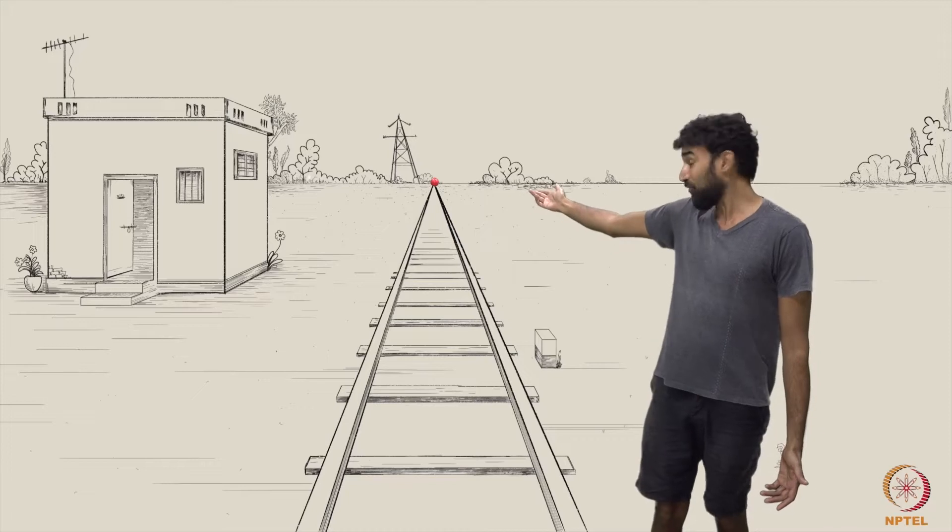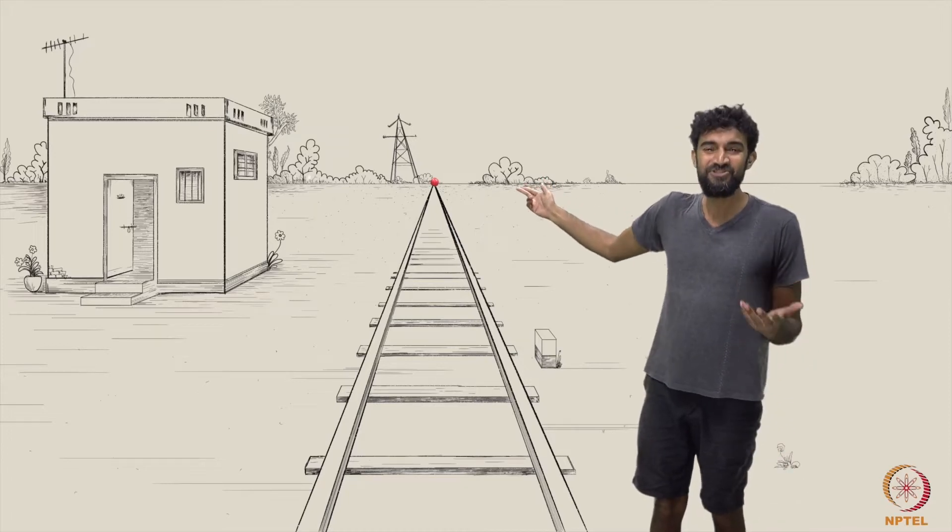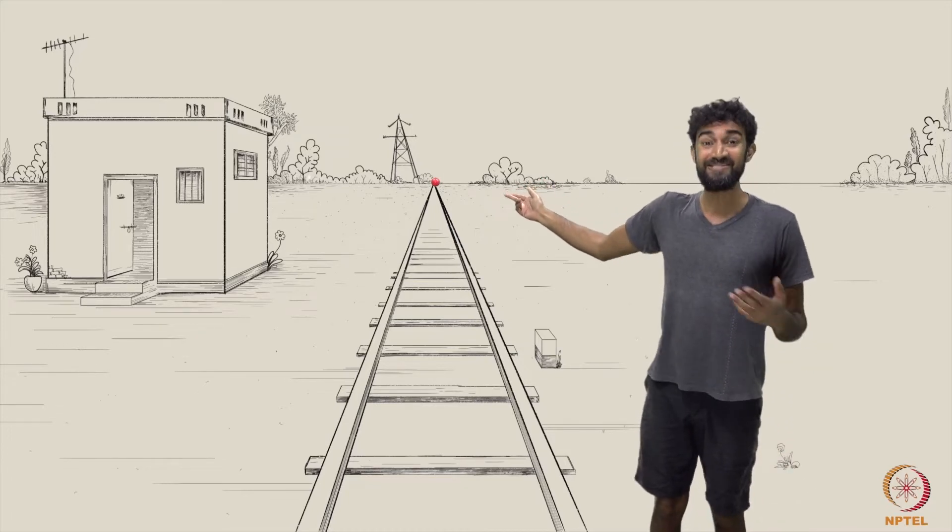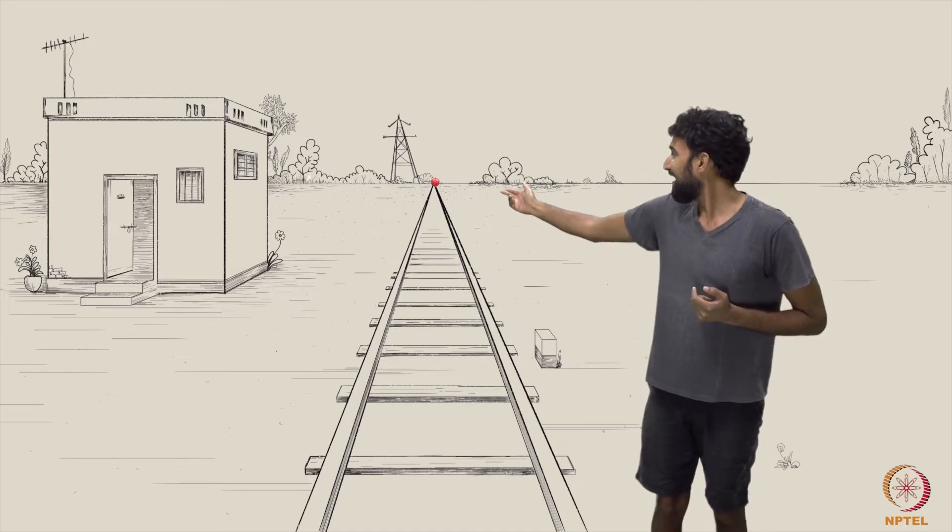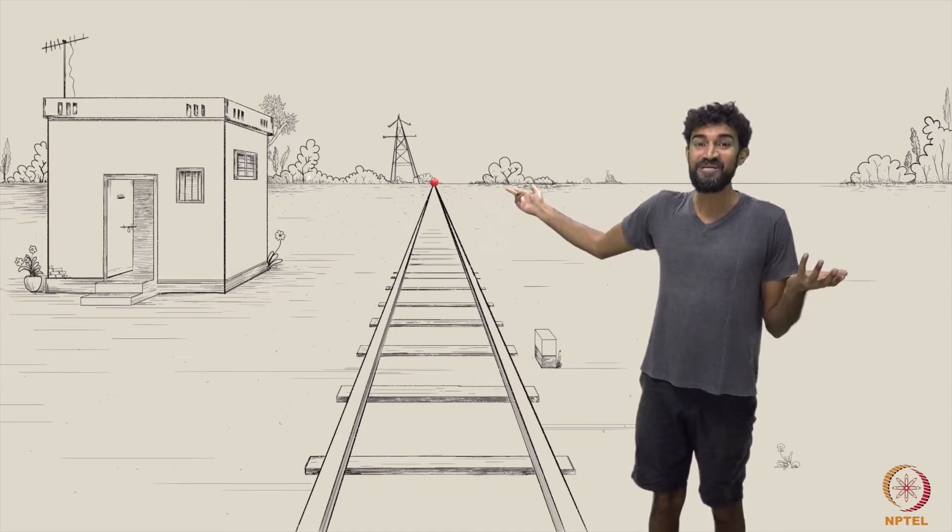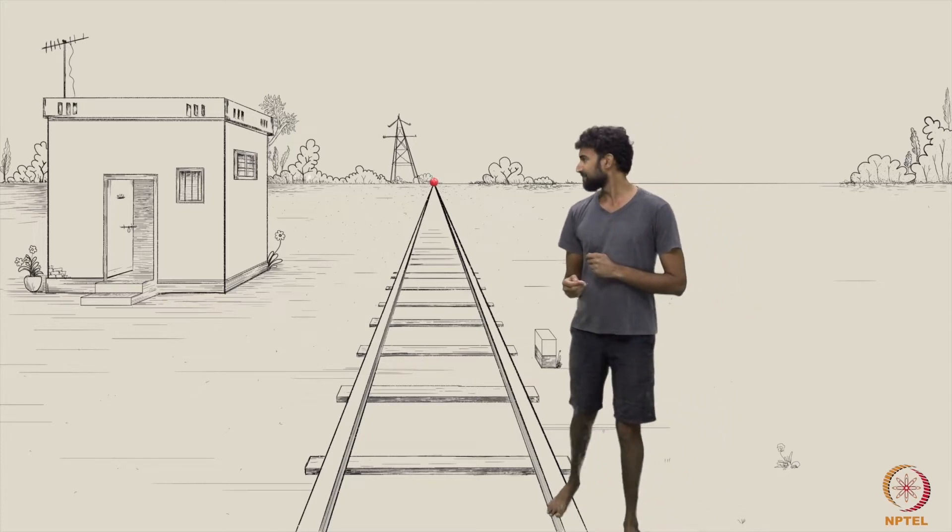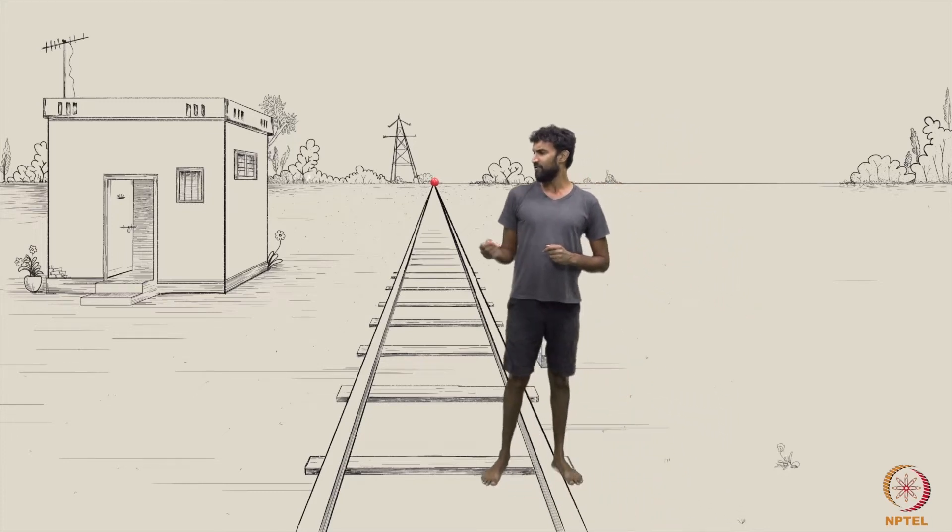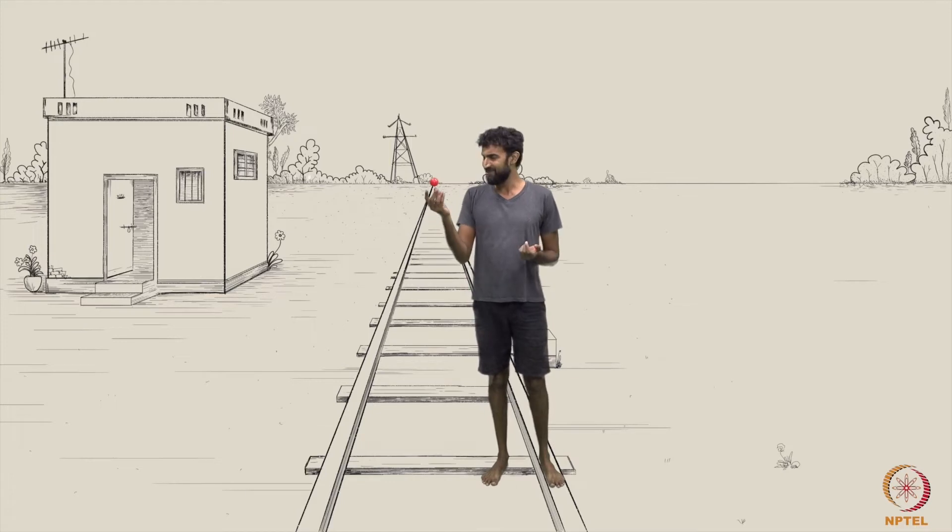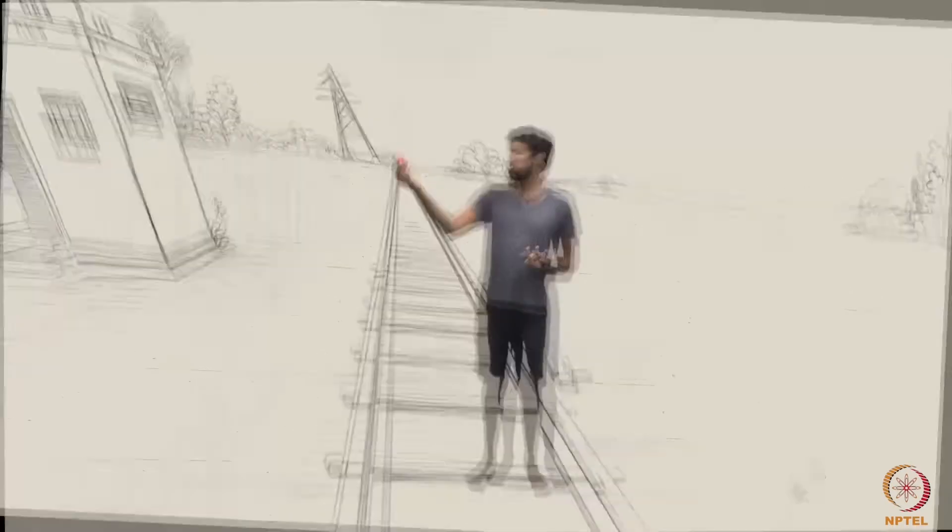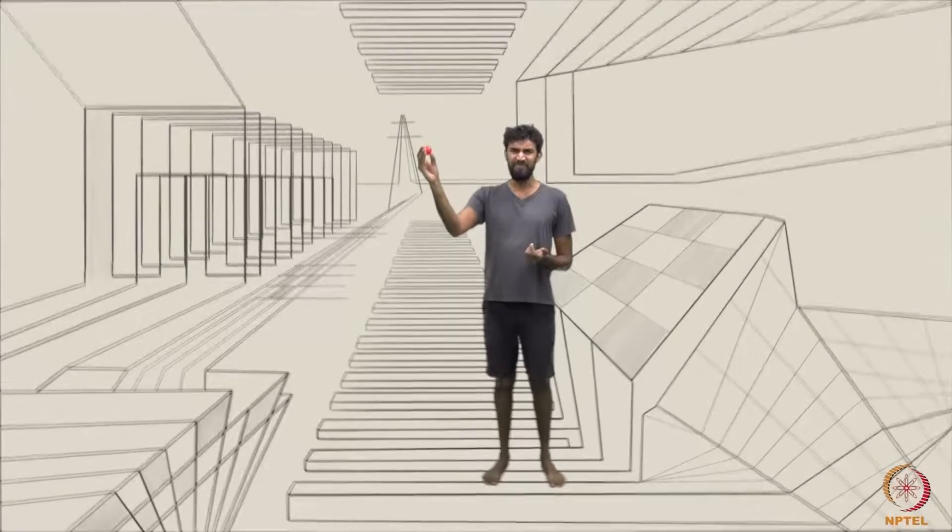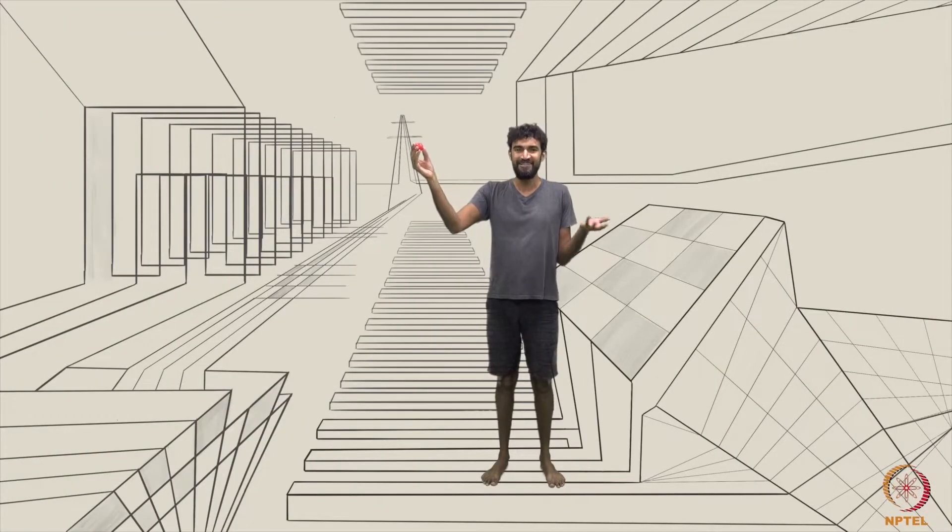Take that vanishing point over there. It seems just as out of reach now as it did back in the studio. And after all, it represents a point at infinity which can never be reached. Or can it? Maybe a point at infinity is just like any other point when viewed from the correct perspective.